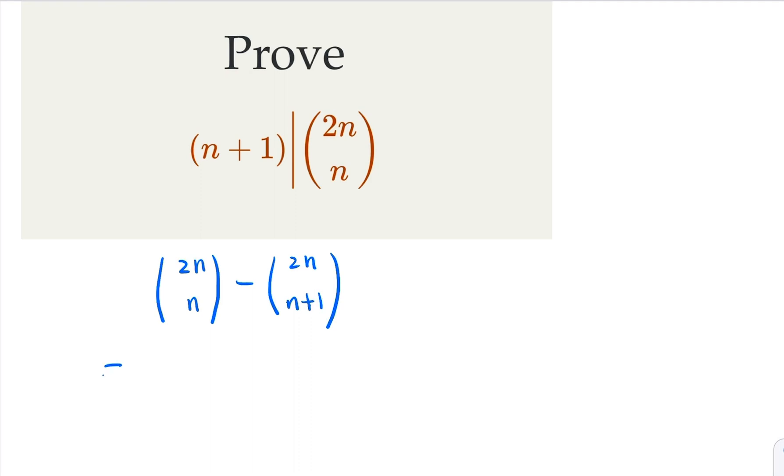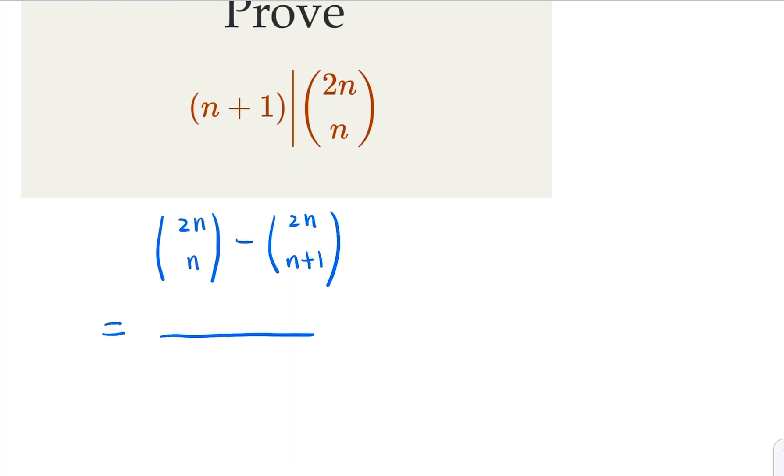Now plug in the formula. The first term is 2n factorial divided by n factorial and n factorial. The second one is going to be, on the top is the same, on the bottom is going to be n plus 1 factorial times n minus 1 factorial.